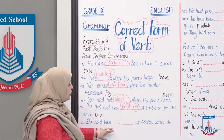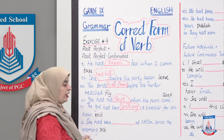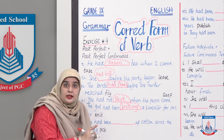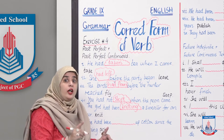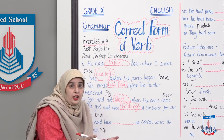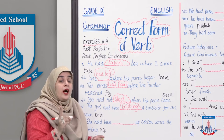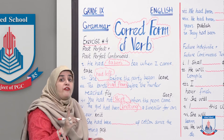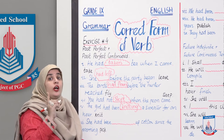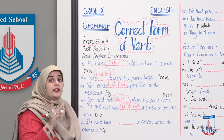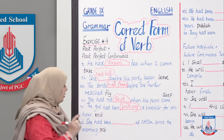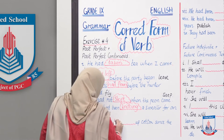'She had been ___ cotton since the morning.' Subha se wo yeh kaam kar rahi hai — past perfect continuous. The identity of past perfect is 'had', and continuous identity is I-N-G at the end of the verb. Answer: 'She had been picking cotton since the morning.'